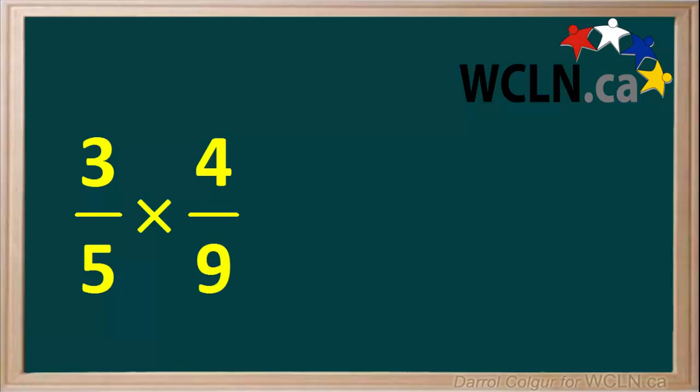Let's say we're asked to multiply the fractions 3 fifths times 4 ninths. First of all, we can check the fractions themselves to see if they can be simplified.